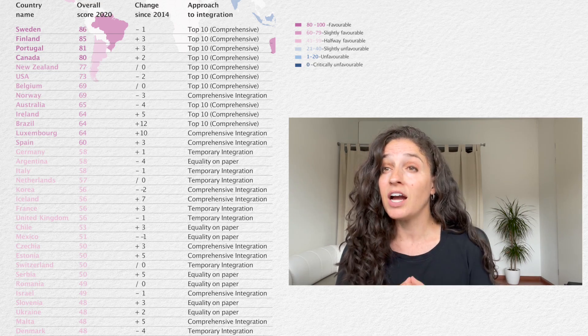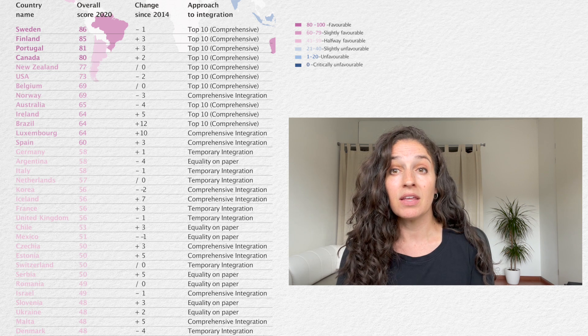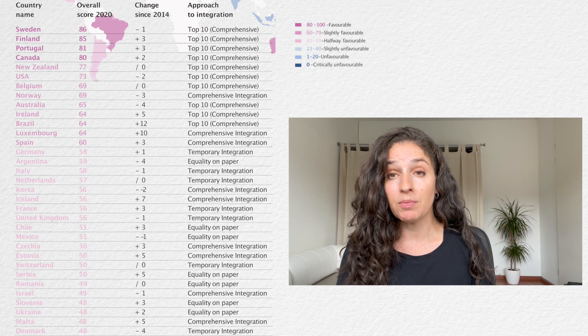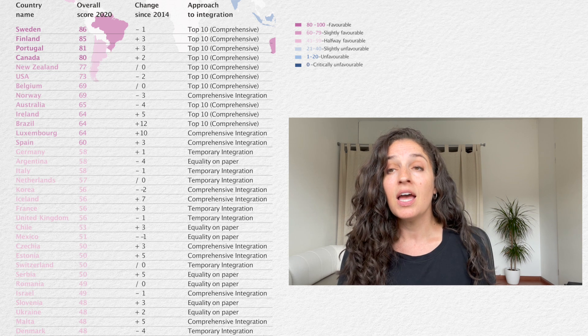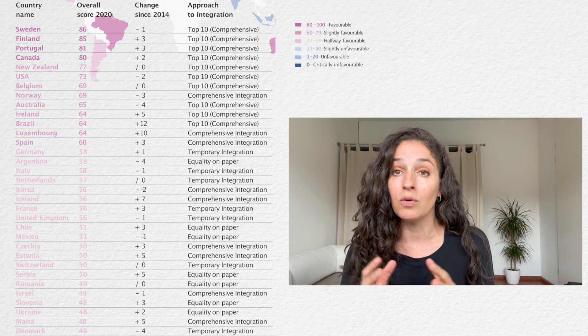Let's look at a summary of the most recent MIPEX overall country scores plus their changes since 2014 — the most current scores are from 2020. Remember that higher scores indicate migration policies that align with standards for equality in EU or UN conventions. Among the top 10 highest scoring countries are six EU or EEA countries: Sweden, Finland, Portugal, Belgium, Norway, and Ireland, as well as two North American countries — Canada and the United States — plus New Zealand and Australia rounding out the top 10.